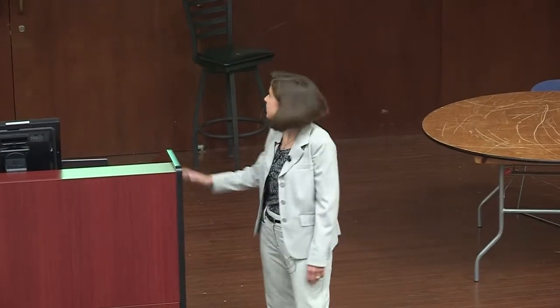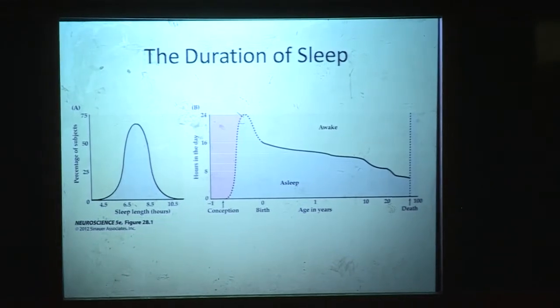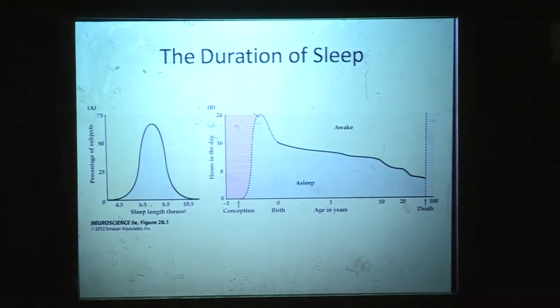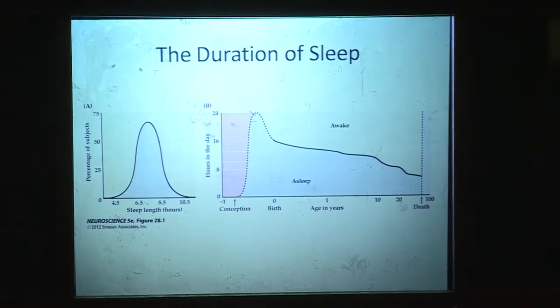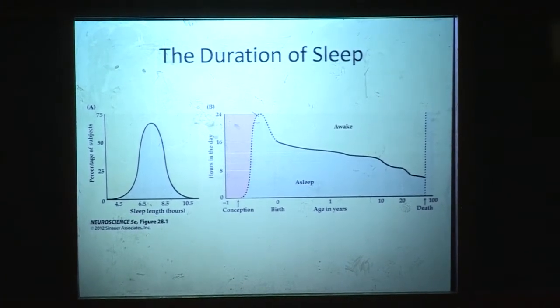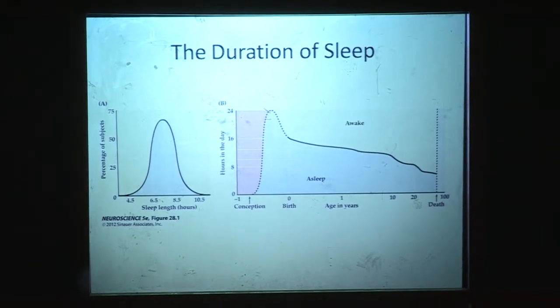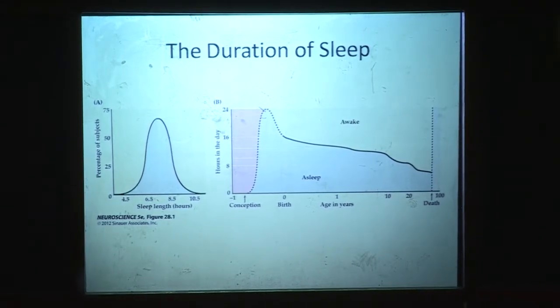Duration of sleep: the neuroscience textbook tells us that sleep length should be about seven and a half hours. The graph on the right side shows sleep over the lifetime — from conception to birth to age one, ten, twenty, and then death — our hours of sleep drop off steadily. A newborn is getting about 16 hours of sleep, although anyone with a newborn will tell you that's in lots of little pieces. By age 20, you should be having about eight hours a night.